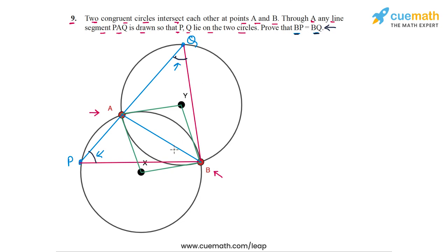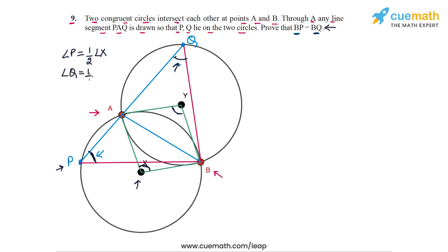Here is the reasoning we will use to show that the angles at P and Q are equal. Angle P will be half of angle X, because these two angles are subtended by the same chord AB, with X at the center and P on the circumference. Similarly, angle Q will be half of angle Y.